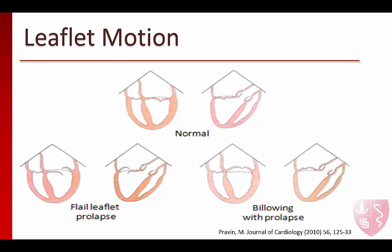Let's define a couple of terms used to describe leaflet motion in mitral valve pathology. Billowing occurs when part of the valve leaflet extends into the atrium during systole, but the coaptation point is below the level of the mitral annulus. Prolapse refers to displacement of the mitral leaflet tip into the atrium, such that leaflet coaptation occurs above the level of the annulus during systole. Flail refers to a leaflet edge that flows freely into the atrium during systole.